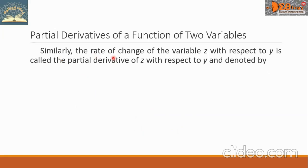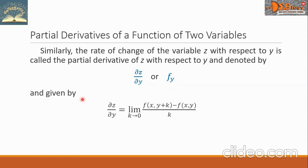Similarly, the rate of change of the variable z with respect to y is called the partial derivative of z with respect to y, denoted by ∂z/∂y or f sub y. It is given by the limit of f(x, y+k) minus f(x, y), all over k, as k approaches zero.